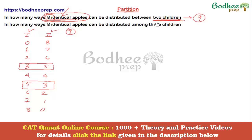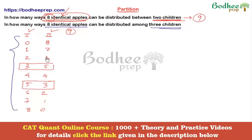This is a very simple question. However, distributing between just two children seldom appears in competitive exams; the number of people to distribute among is usually greater than two. That's why we take a second question where we distribute eight identical apples among three children. We could make a similar table, but the number of cases would be more, and there's a high chance of missing or repeating cases. The effort required is too high and not worth it.